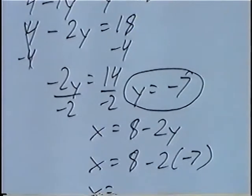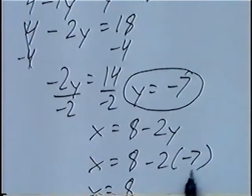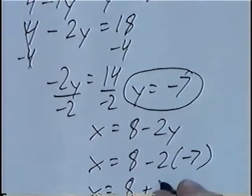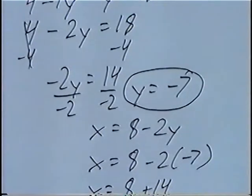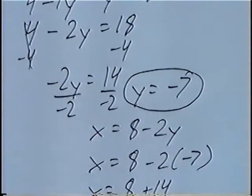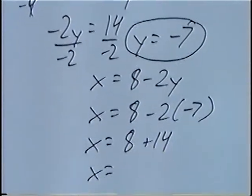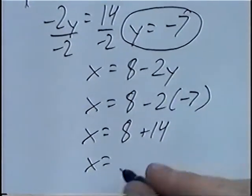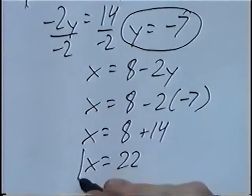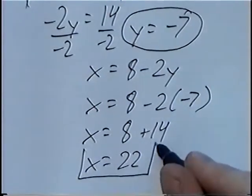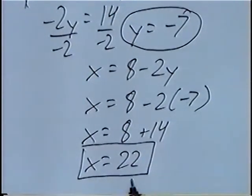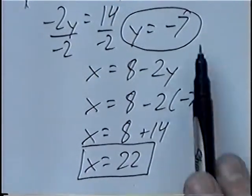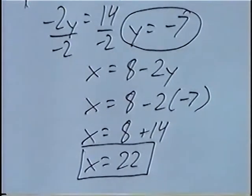x equals 8. Negative 2 times negative 7 would be positive 14. And x equals 22. So our two answers are x equals 22 and y equals negative 7.